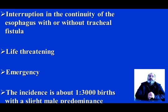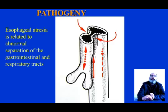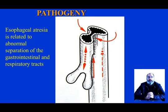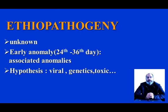The incidence of oesophageal atresia is about 1 in 3,000 births with a slight male predominance. The pathogeny of oesophageal atresia is related to abnormal separation of the gastrointestinal and respiratory tracts, and the etiopathogeny is unknown. This is an early anomaly occurring between the 24th and the 36th day of development.